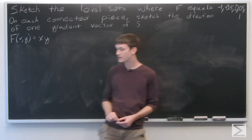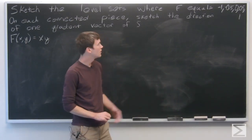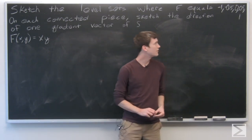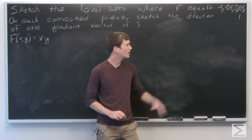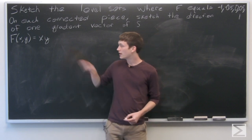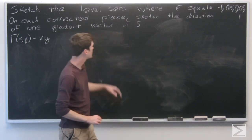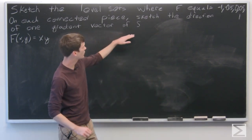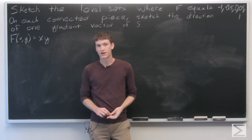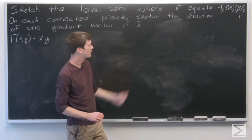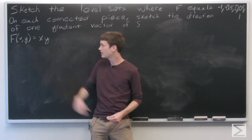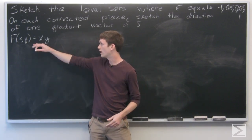In this problem, we're asked to sketch the level sets where f is equal to negative 1, negative 0.5, 0, 0.5, and 1. On each of the connected curve pieces, we're going to sketch the direction of one gradient vector of f. Our function f of x, y is given as equal to x times y.